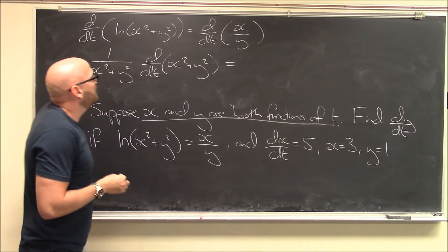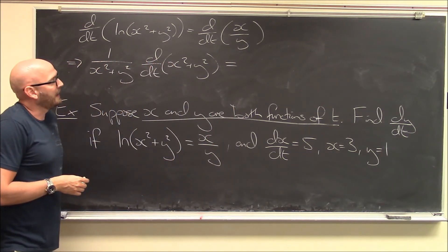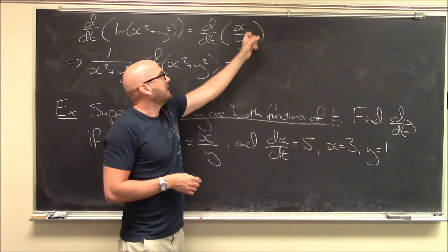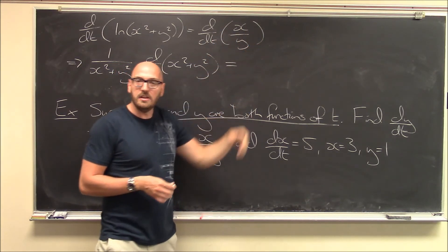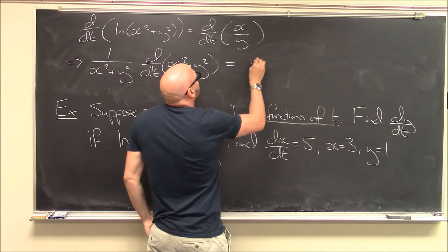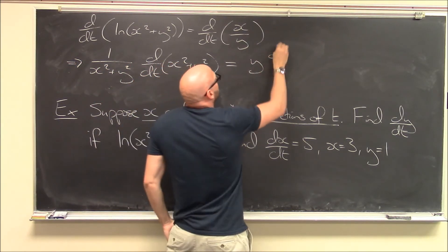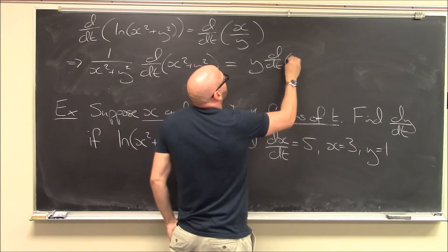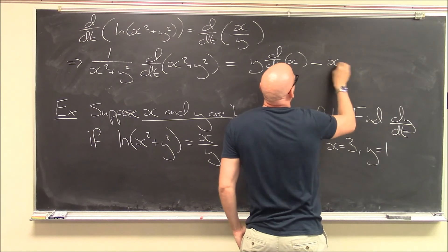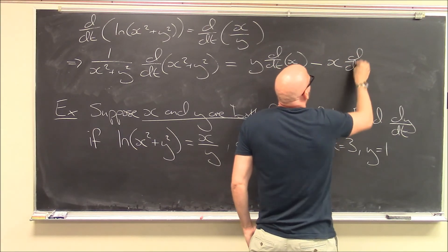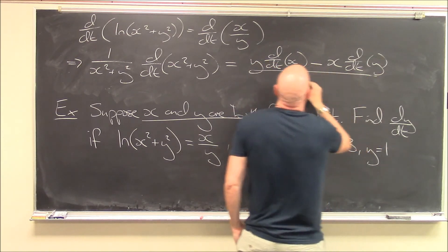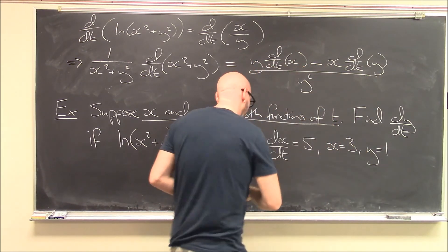On the right-hand side, we have the derivative with respect to t of a quotient — a function of t over a function of t — so I have to use the quotient rule. It's going to be low d-high: the bottom times the derivative of the top with respect to t, minus high d-low: the top times the derivative of the bottom with respect to t, all over the bottom squared.